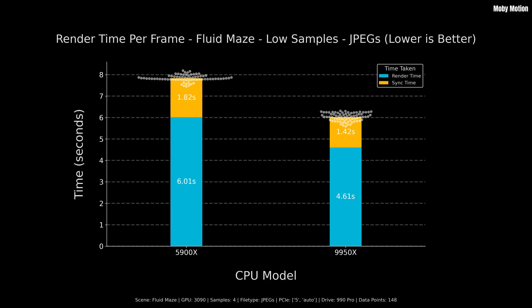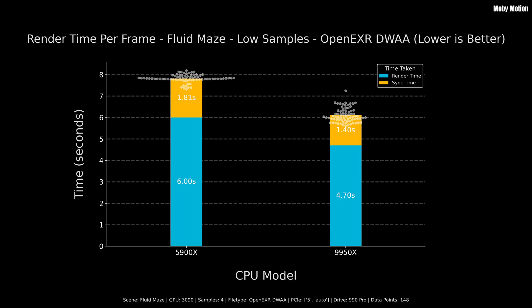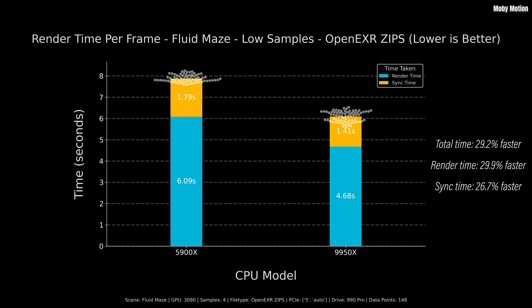Now let's look at the same results for the three file types for the fluid maze scene. For JPEGs, the total time was exactly 30.0% faster. The render time itself was 30.4% faster, and sync time was 28.6% faster — the speedup is roughly equally distributed. For OpenEXR DWAA: 28% faster total, render 27.7% faster, sync 29.2% faster. Using lossless compression: 29.2% faster overall, cycles render 29.9% faster, sync 26.7% faster.